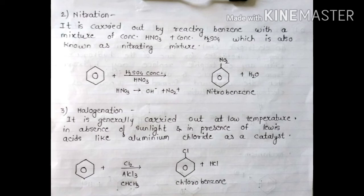Third reaction is halogenation. It is generally carried out at low temperature in absence of sunlight and in presence of Lewis acids like aluminum chloride as a catalyst. In the reaction, benzene reacts with Cl2 in presence of AlCl3. The product will be chlorobenzene, and one Cl plus H will become HCl.